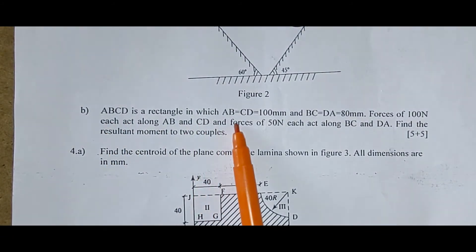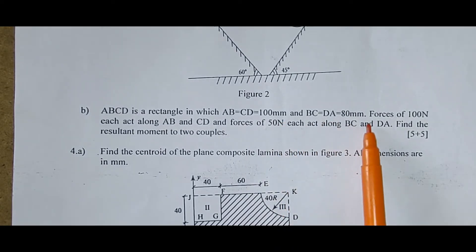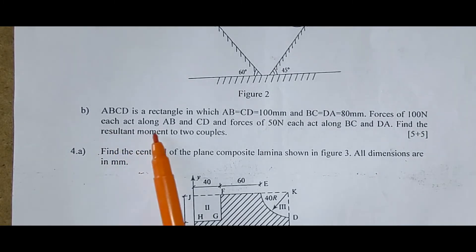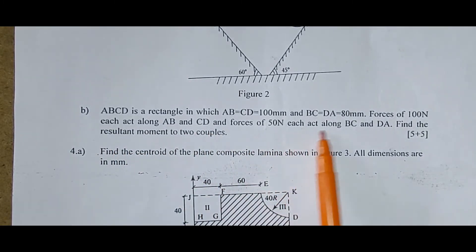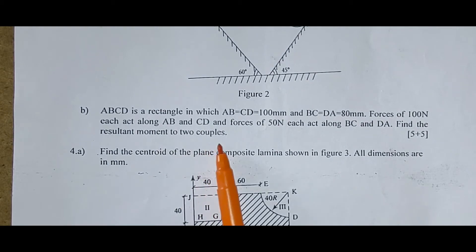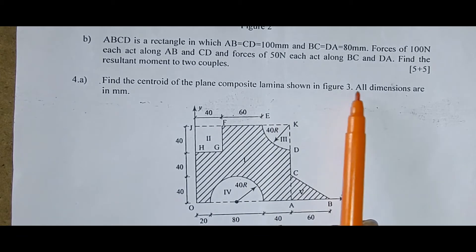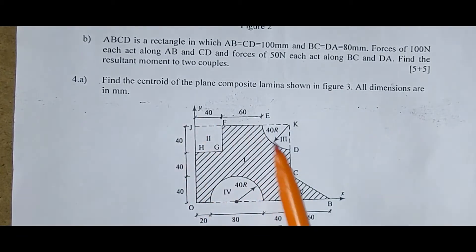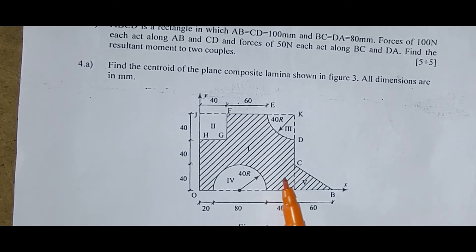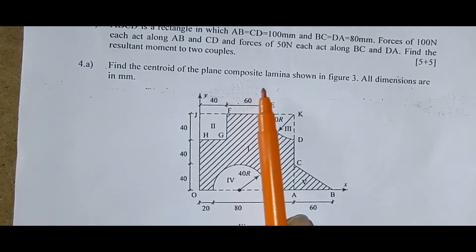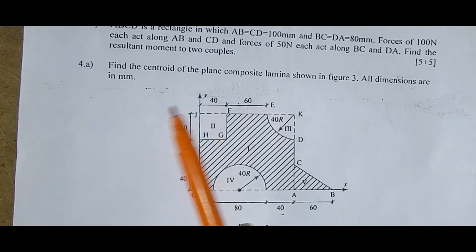ABCD is a rectangle in which AB is equal to CD is equal to 100 mm and BC equal to DA is equal to 80 mm. Forces of 100 N each act along AB and CD. Forces of 50 N each act along BC and DA. Find the resultant moment due to two couples. Next, find the centroid of the plane composite lamina shown in the figure. All dimensions are in mm. As you can see, this is the diagram. For the given diagram, find the centroid of the plane composite lamina. All dimensions are in mm.